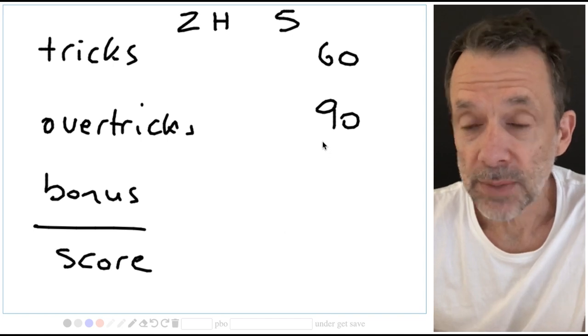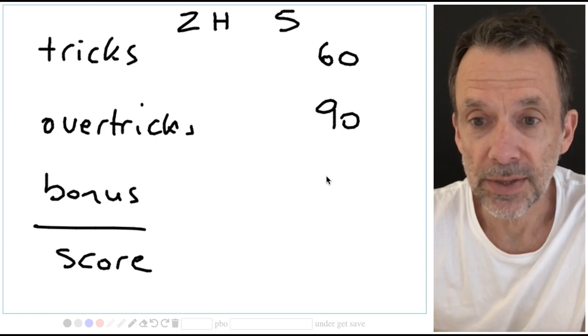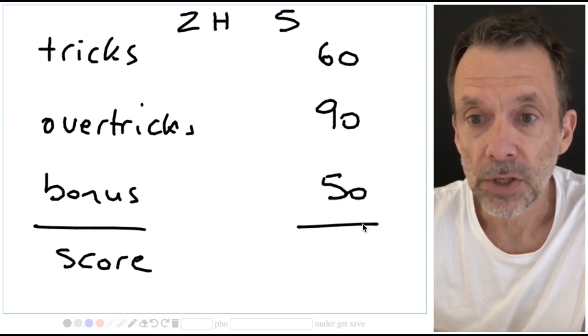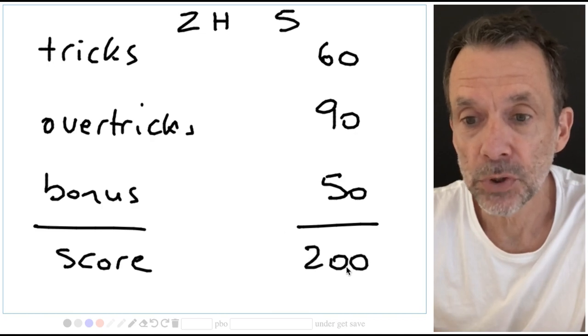Did our trick points add up to 100? No they did not. So we get the part score bonus of 50 points. Total score for two hearts making five, 200 points.